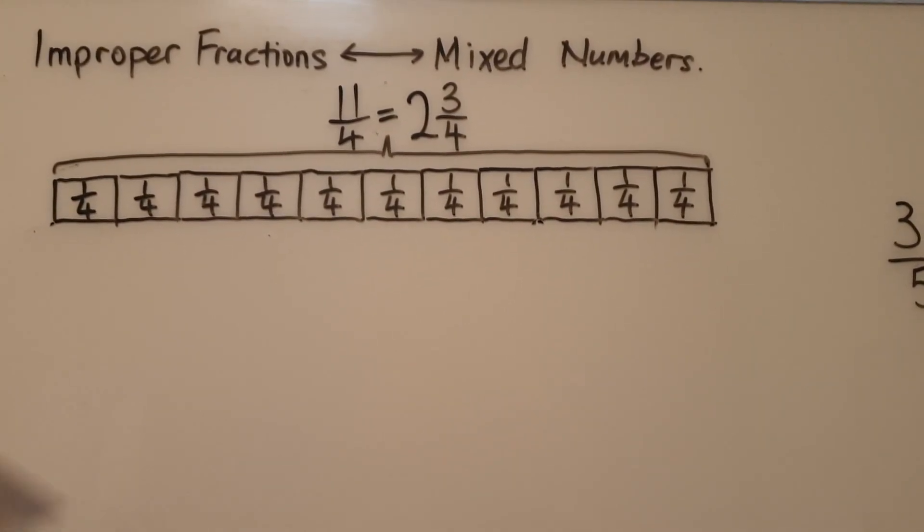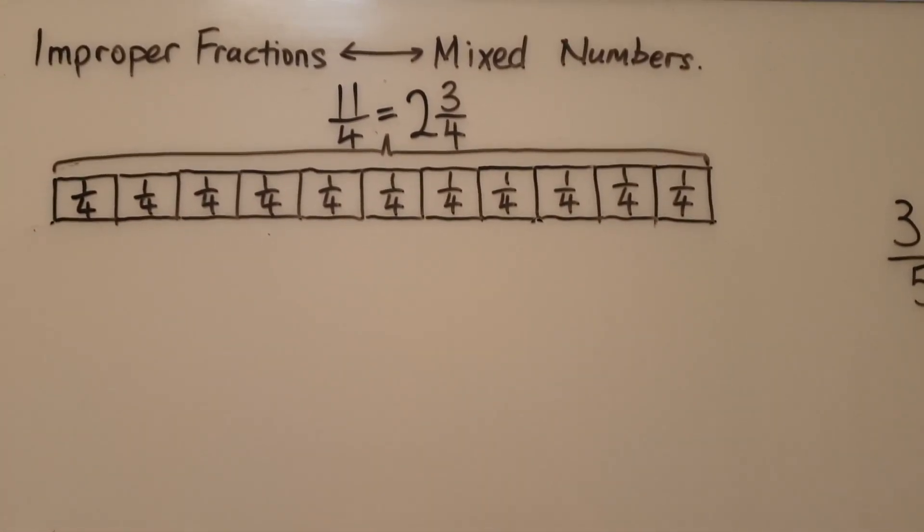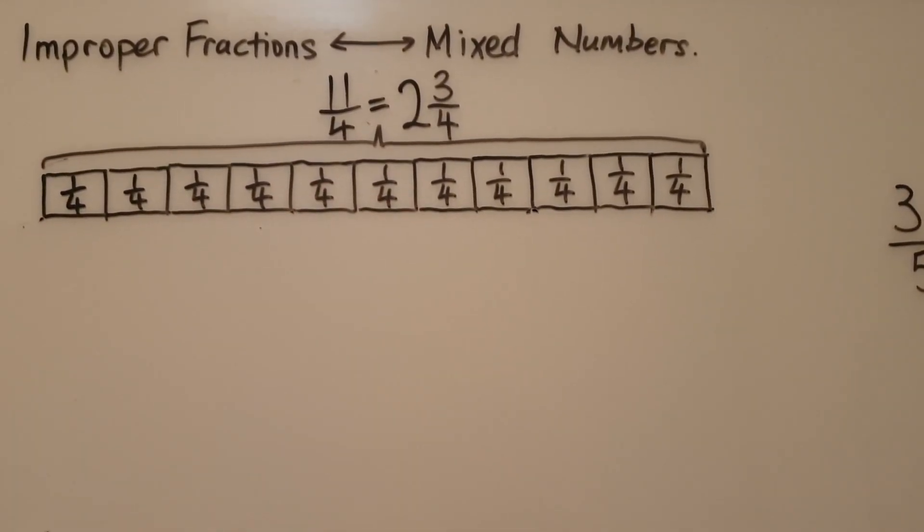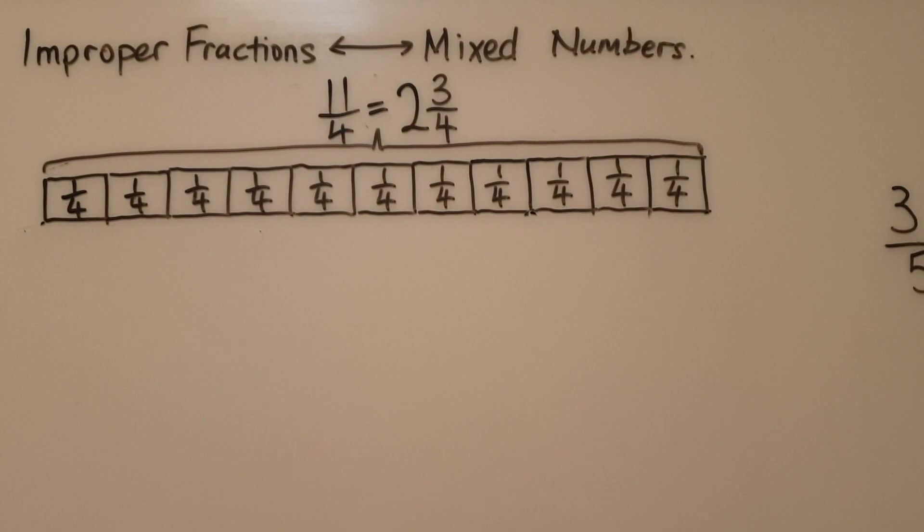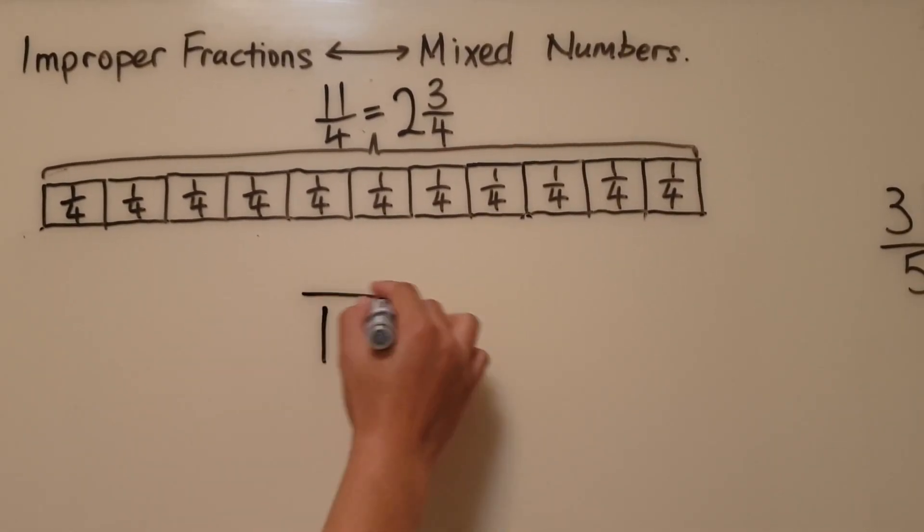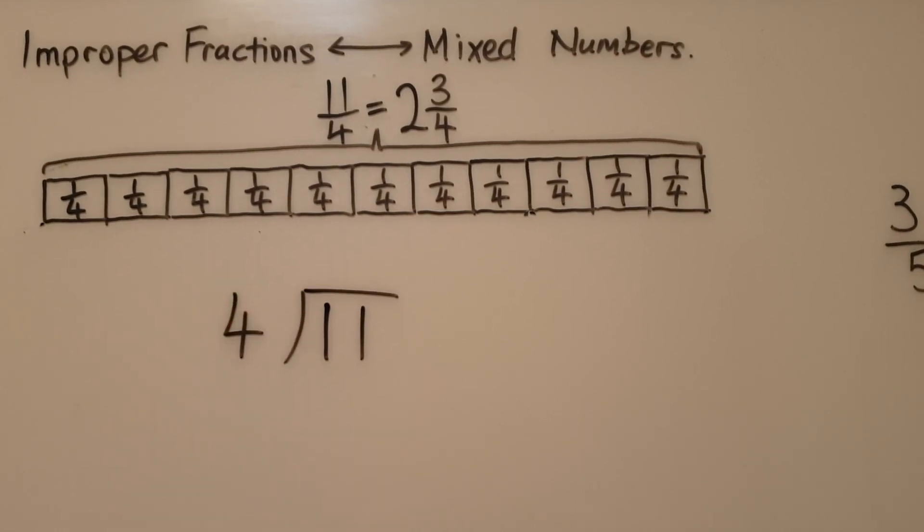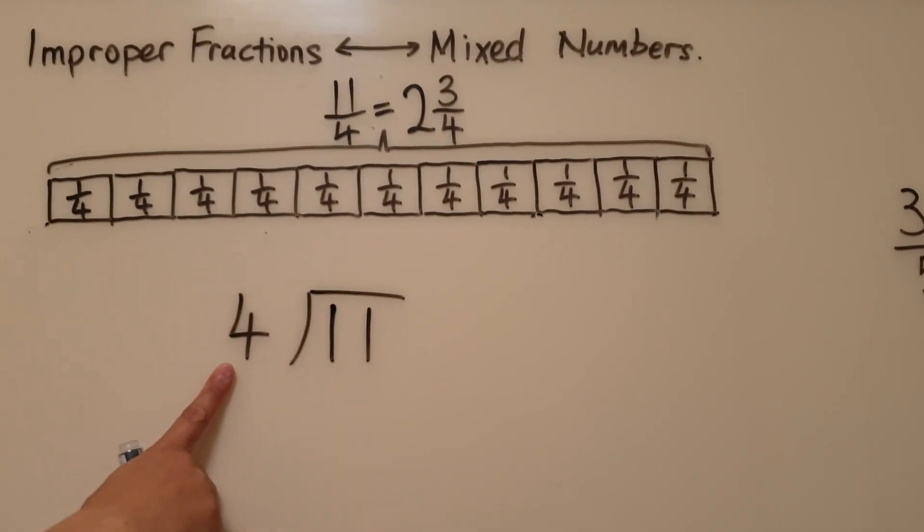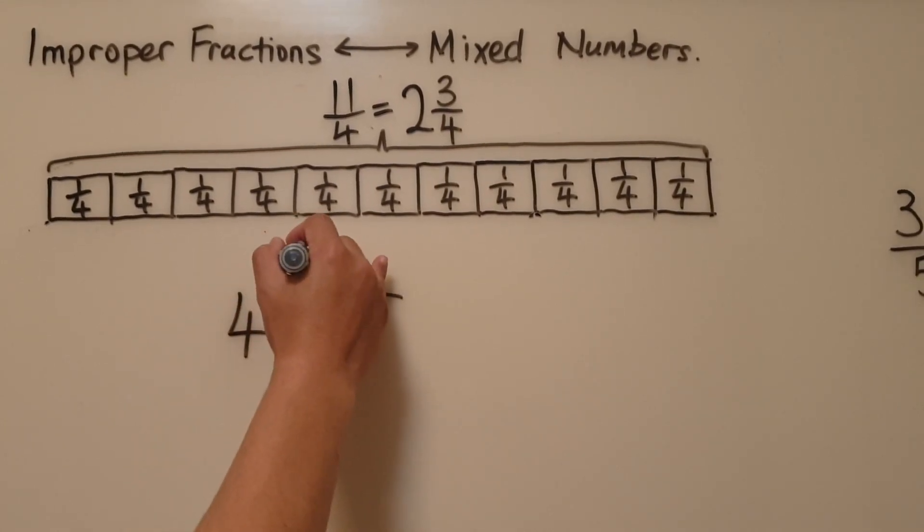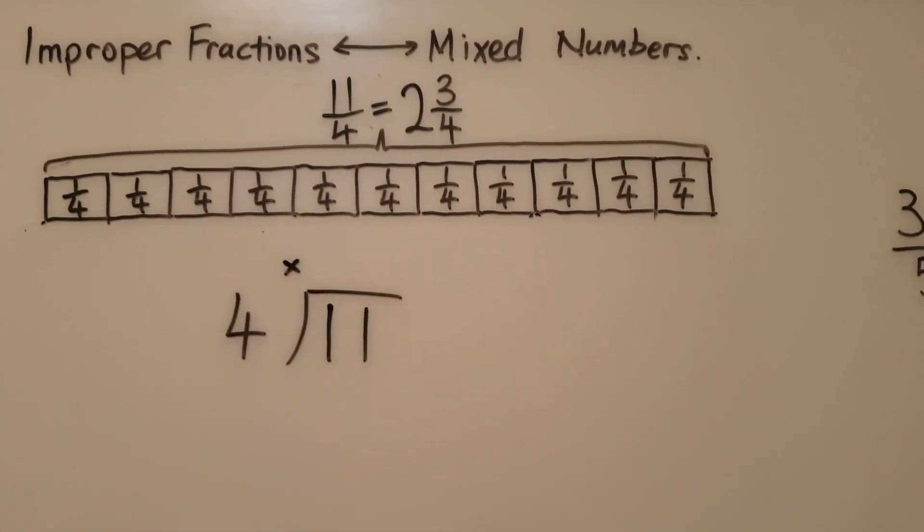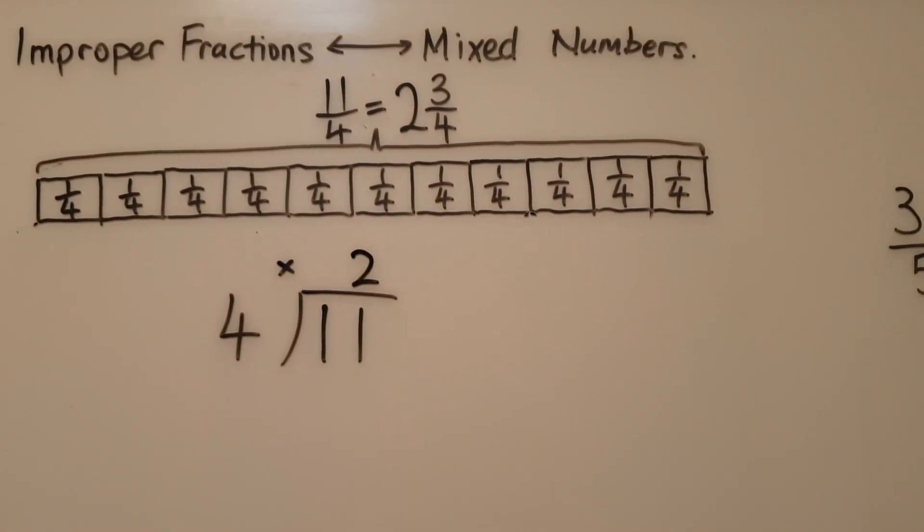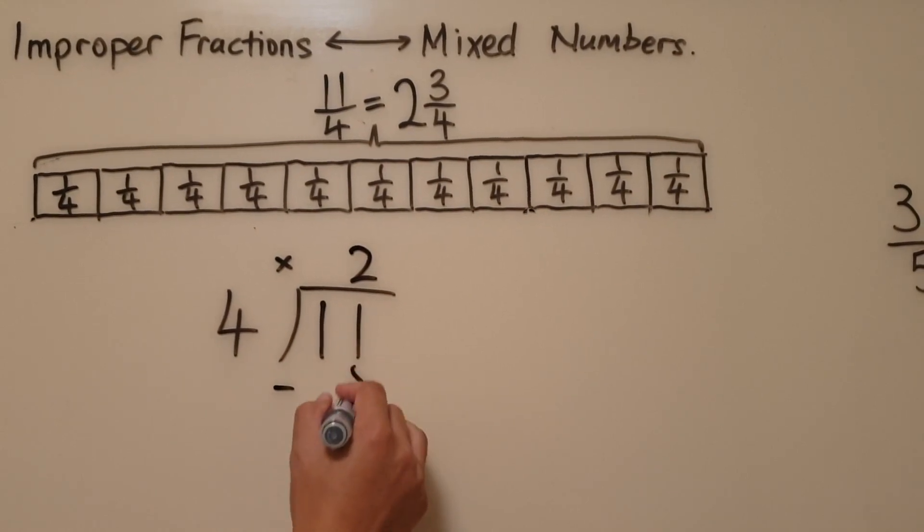So we actually found out that out of 11 quarters, we are able to put 2 groups of 4 quarters. Now let's see if we can do a division working to show this. Now 11 divided into 4, or I'm trying to see how many groups of 4 can I find in 11. So 4, according to the times table, 4, 8. 4 times 2. If I have 2 groups of 4, that gives me 8 parts.